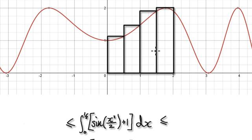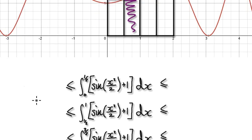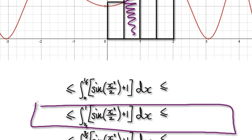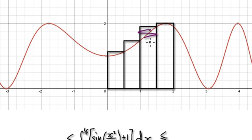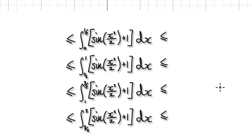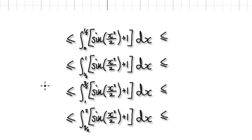Then do the same for this next rectangle here. And then do the same for the third rectangle here — come up with the highest possible value and the lowest possible value, and so on.